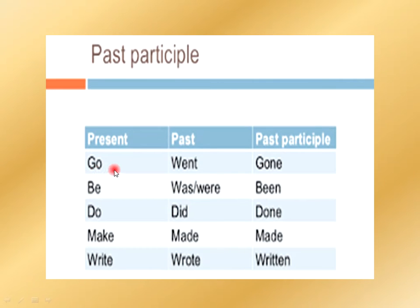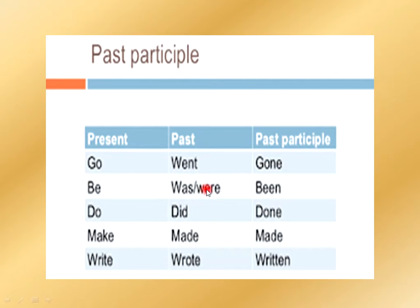Let's have a look at some more examples. You can see: 'go' is the present form, 'went' is the past form, and its past participle is 'gone.' Similarly, 'be,' 'was/were,' 'been' — these are all past participles.